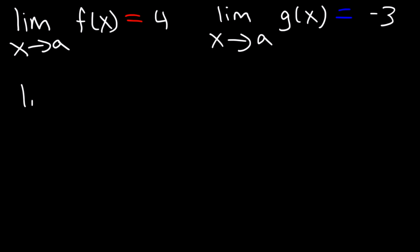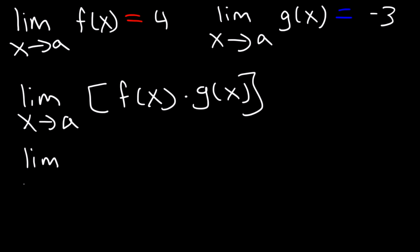Try this one. What is the limit as x approaches a of the expression f of x times g of x? Show your work as well. Now, instinctively, you know it's 4 times negative 3, which is negative 12. But to show your work, write it like this first.